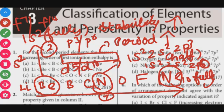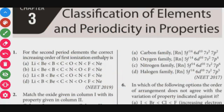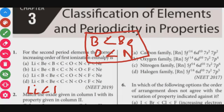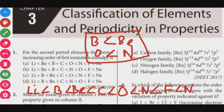Because of this, beryllium, boron, and oxygen will show exceptions. The correct increasing order of ionization enthalpy is: lithium, boron, beryllium, carbon, oxygen, nitrogen, fluorine, neon — where boron is inserted before beryllium, and oxygen before nitrogen.